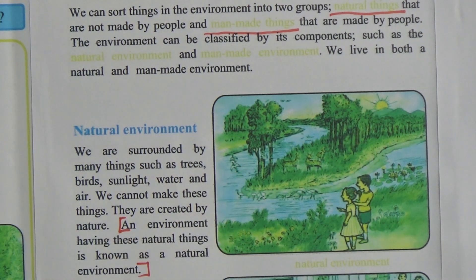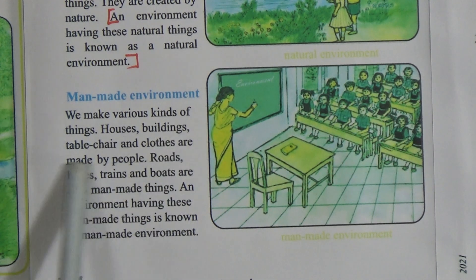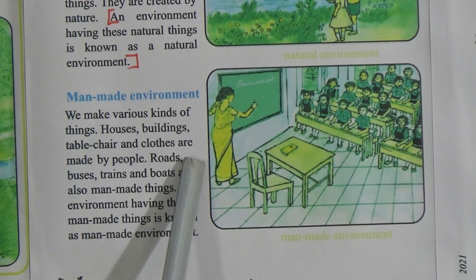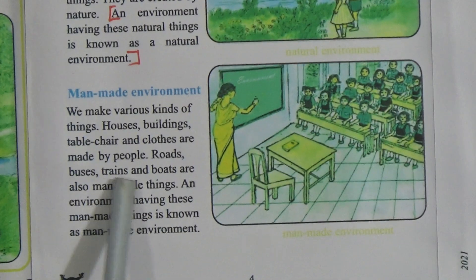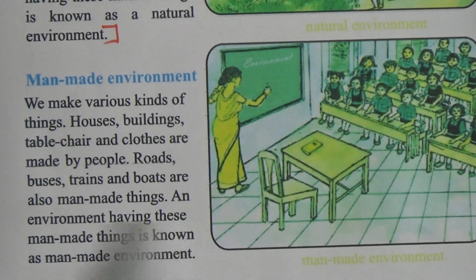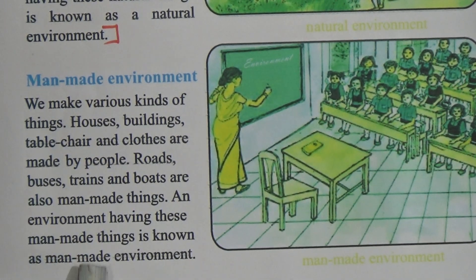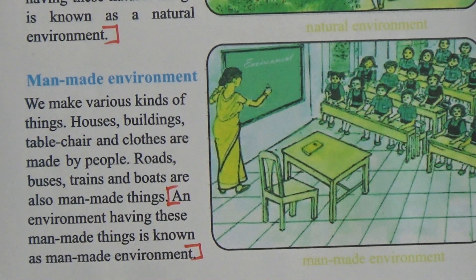Now come to man-made environment. We make various kinds of things. Houses, buildings, tables, chairs, and clothes are made by people. Roads, buses, trains, and ports are also man-made things. An environment having these man-made things is known as a man-made environment. This is the definition of man-made environment.